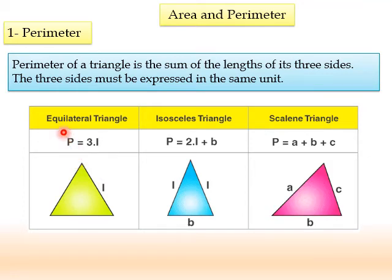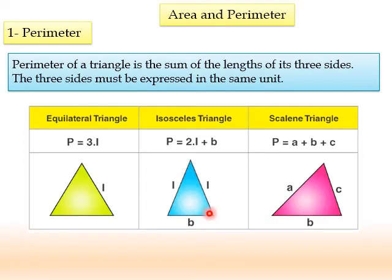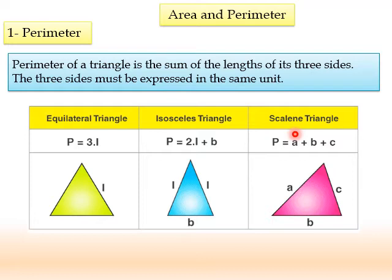If we have an equilateral triangle, where all three sides are equal — for example, each side has length I — then the perimeter is I plus I plus I, or simply 3 times I. In an isosceles triangle, we have two equal sides and a base. The perimeter is the base plus the two equal sides, written as 2I plus B, or I plus I plus B. For a scalene triangle with no equal sides, if the side lengths are A, B, and C, the perimeter is A plus B plus C.